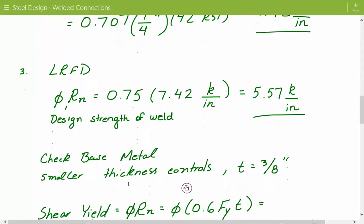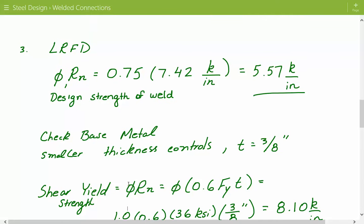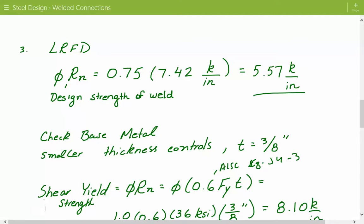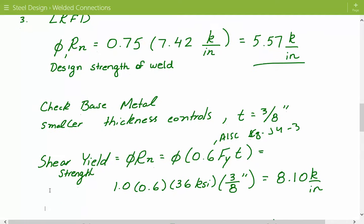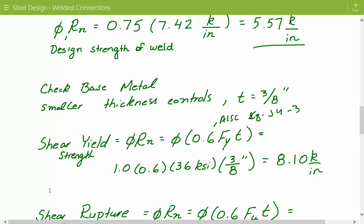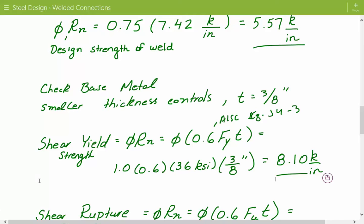Base metal shear yield is based on AISC equation J4-3: resistance factor times 0.6 times the yield strength times the thickness of the member. Plugging in: 1.0 times 0.6 times 36 KSI times three-eighths inch gives 8.10 kips per inch.